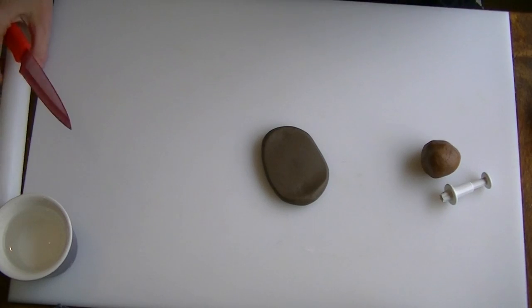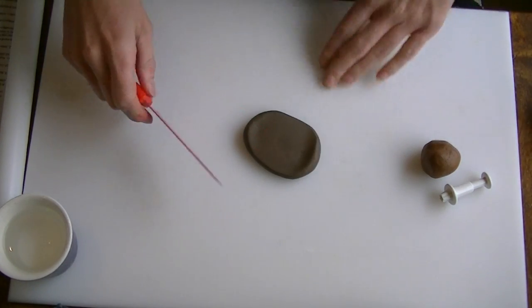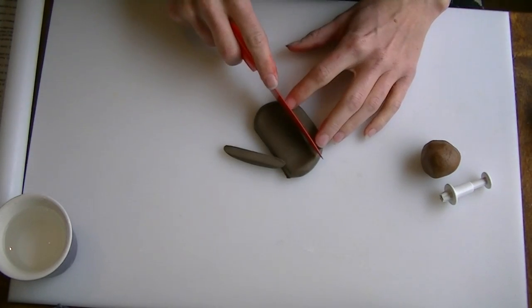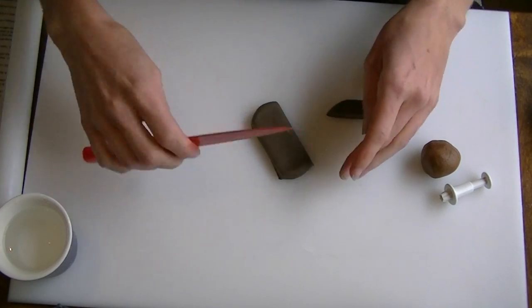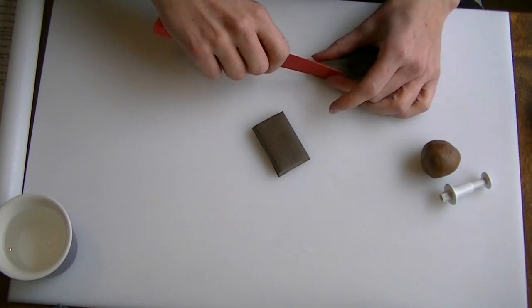I will put some links below to the tools that I use in the video in the description. So I have literally started by just rolling it out and we are literally just going to cut a rectangle like so.